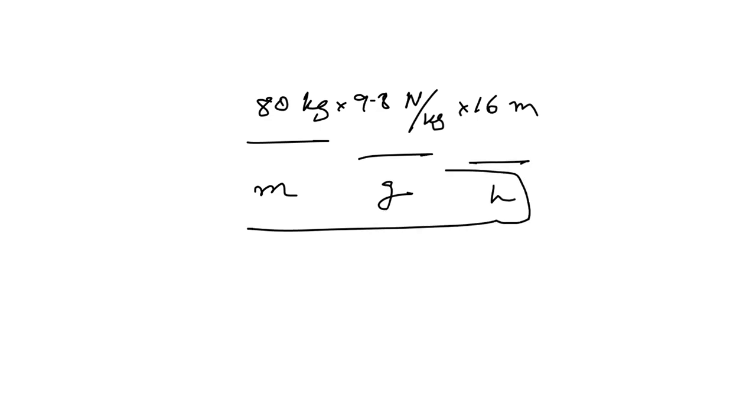Hello and welcome to this video solution. Here we are given this equation which is 80 kg times 9.8 Newtons per kg times 16 meters. So this is a mass, this is the acceleration due to gravity g, and this is the height. Clearly these three parameters, if you take the multiplication, give potential energy.